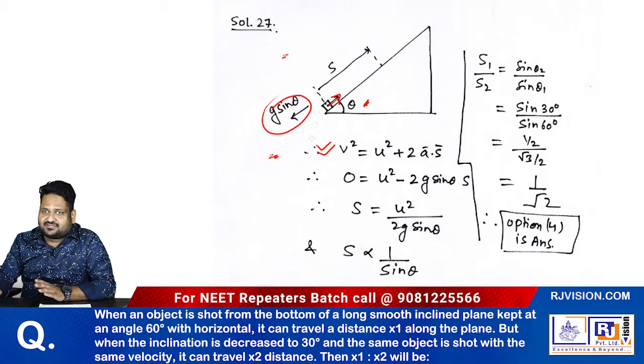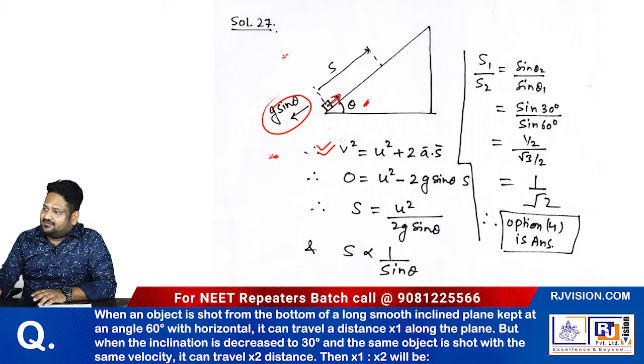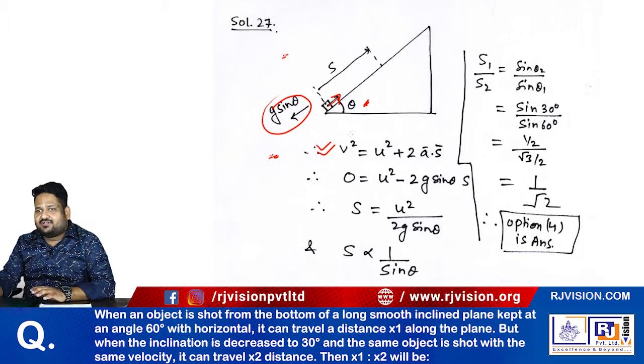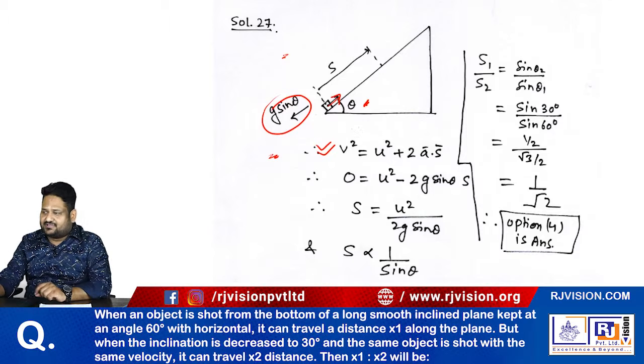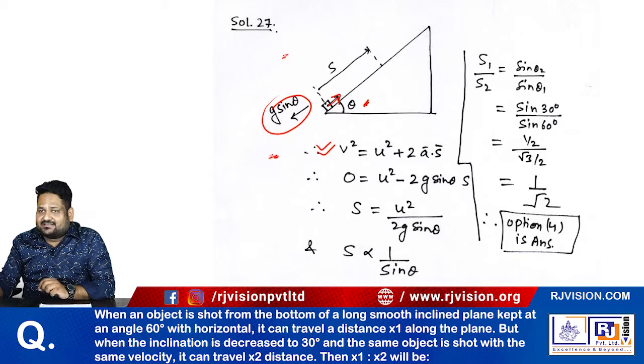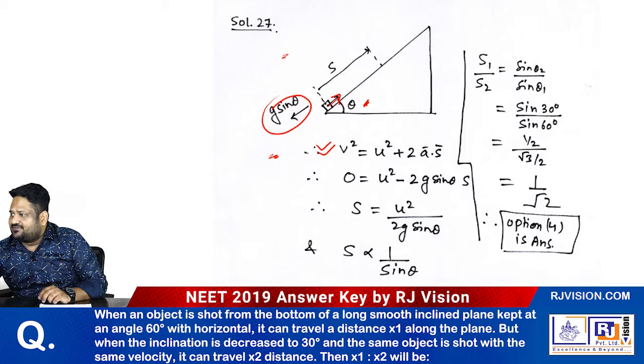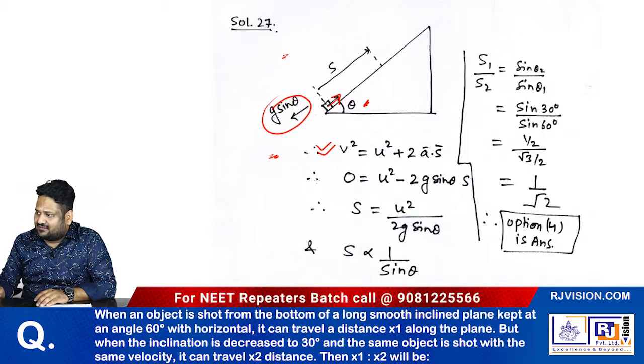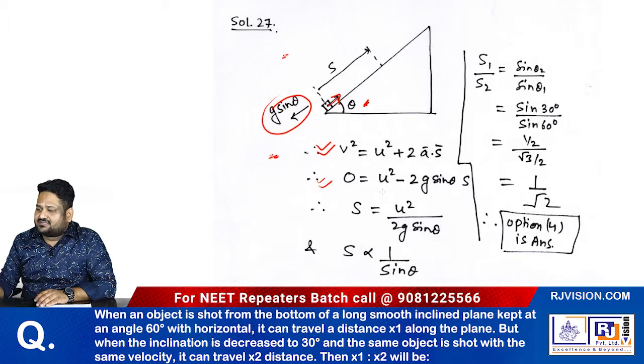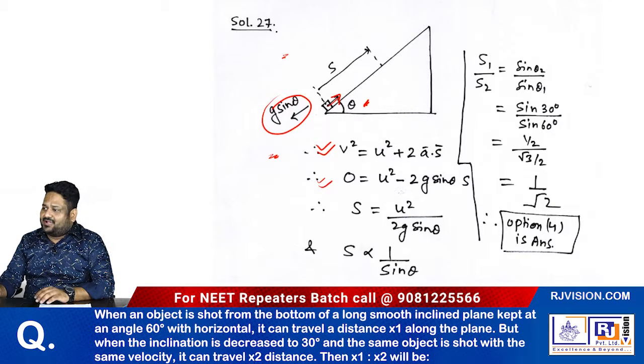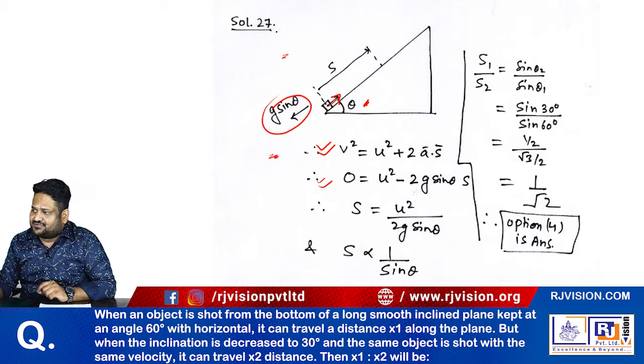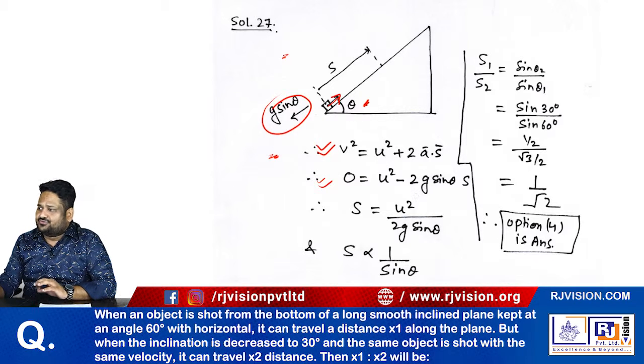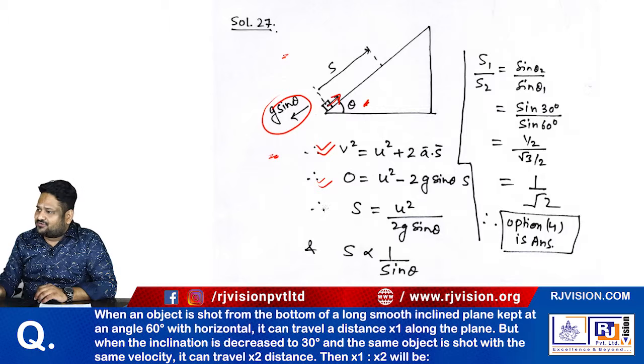According to the equation of motion, because the acceleration is constant along the plane, we can use the equation of motion: v² = u² + 2as. Here it is a case of retardation, which means final velocity is equal to 0. That is given in the question, which equals u² minus 2g sin theta times s.